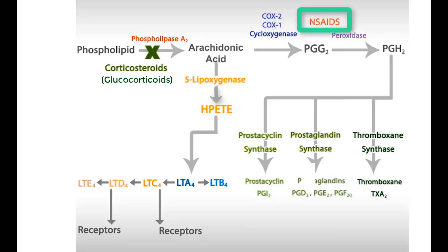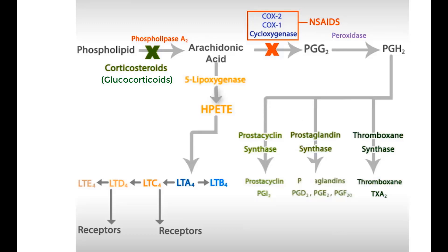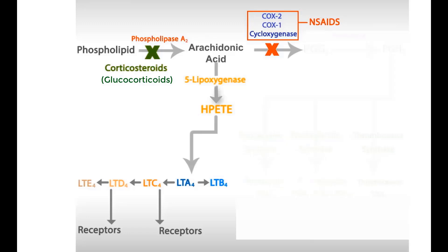The non-steroidal anti-inflammatory drugs, abbreviated as NSAIDs, unselectively inhibit both COX-1 and COX-2 isoenzymes. Remember, glucocorticoids are steroidal anti-inflammatory drugs, whereas COX-inhibitors are non-steroidal anti-inflammatory drugs. NSAIDs inhibit the production of all prostanoids, including prostaglandin, thromboxane, and prostacycline.